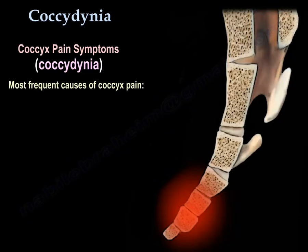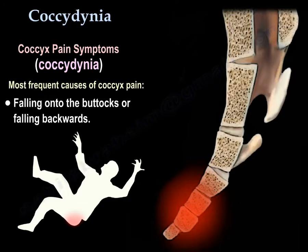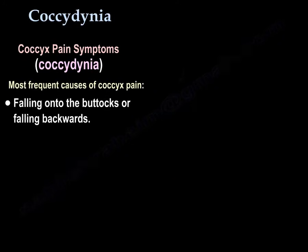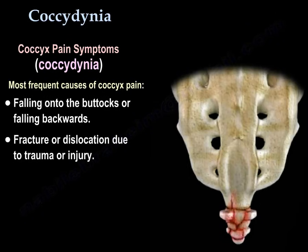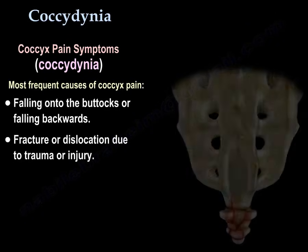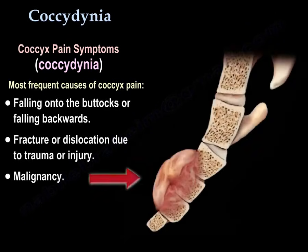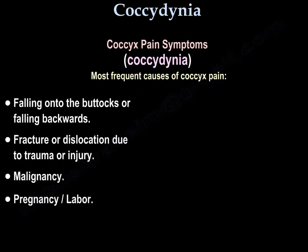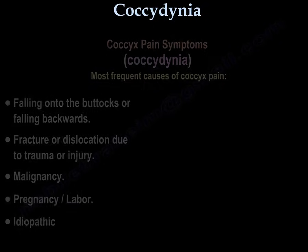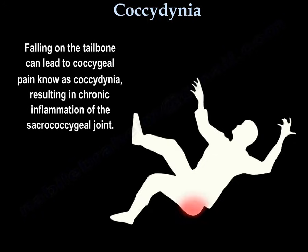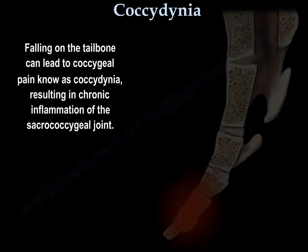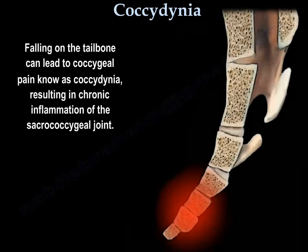The most frequent causes of coccyx pain are falling onto the buttocks or falling backwards, fracture or dislocation due to trauma or injury, malignancy, and pain occurring during pregnancy and labor. The condition may also be idiopathic. Falling on the tailbone can lead to coccyx pain known as coccydynia, resulting in chronic inflammation of the sacrococcygeal joint.